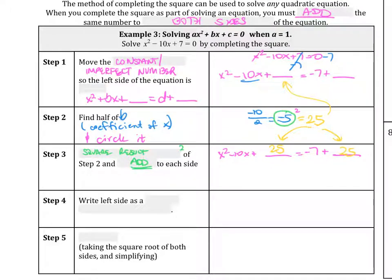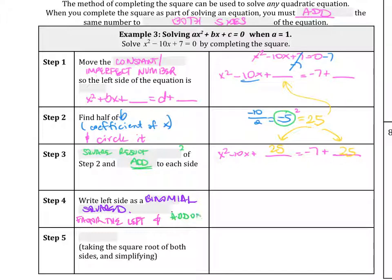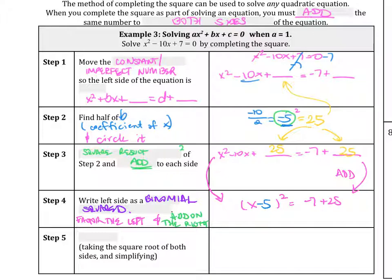Then we write the left side as a binomial squared — we factor the left and add on the right. The left side factors to (x minus 5) squared. Remember that negative 5 we circled — that goes inside. On the right, negative 7 plus 25 simplifies to 18. So we have (x minus 5) squared equals 18.